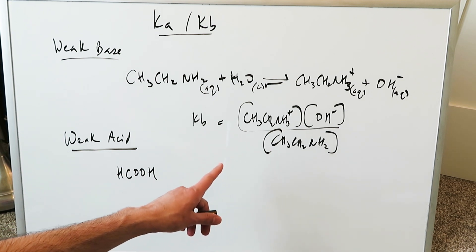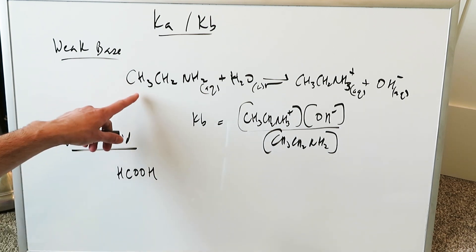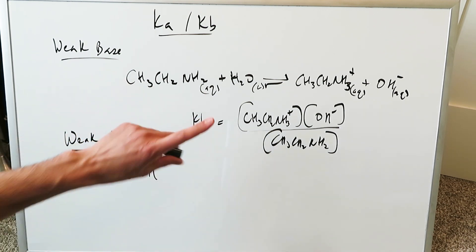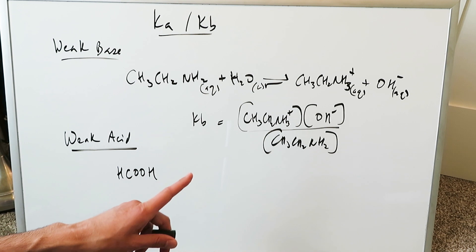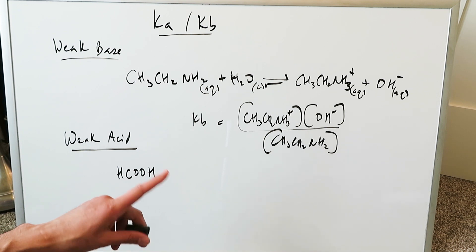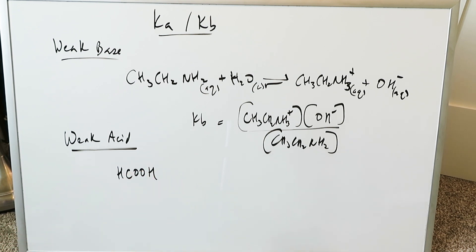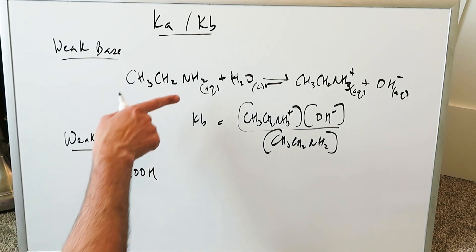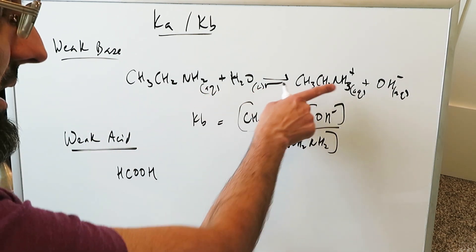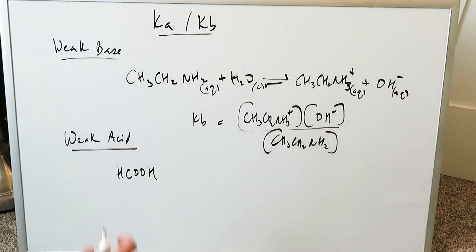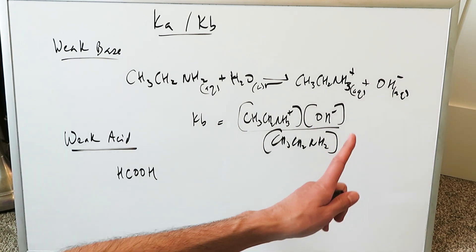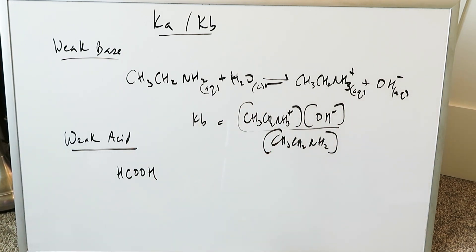When you're looking at this specific item — ethylamine — it has both a KB and a Ka: a base dissociation and an acid dissociation. When you're looking at the forward reaction, you're looking at the KB. When you're looking at the reverse reaction, you'll bring in the Ka.